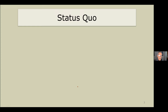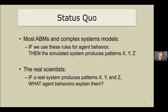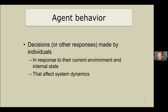A lot of agent-based models use the approach of: if we assume a certain set of rules for agent behavior, the simulated system produces patterns X, Y, and Z. But the real scientists are the ones who start by looking at the real system and asking: if the real system produces patterns X, Y, and Z, what agent behaviors explain those patterns? That's how we really learn to understand the real world.